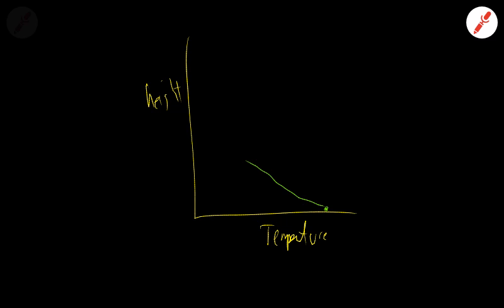And it decreases up to a point, and that point is what's called the tropopause. Below that point is called the troposphere.